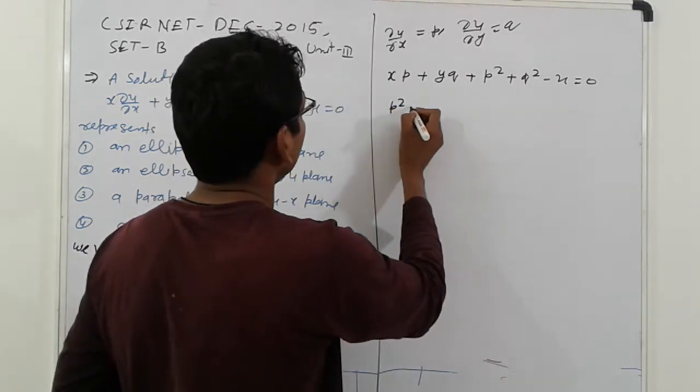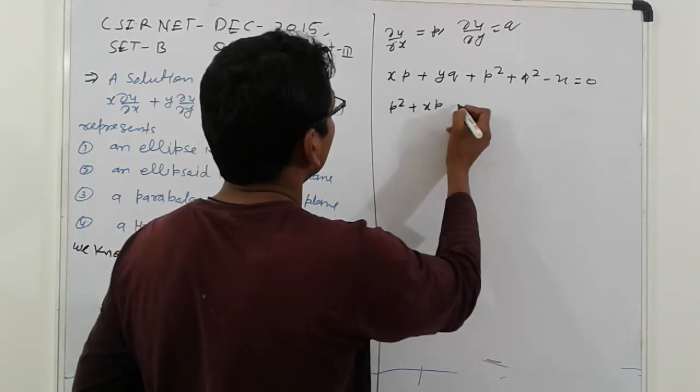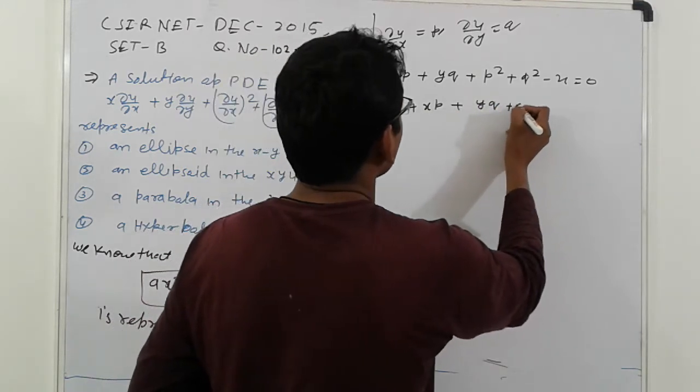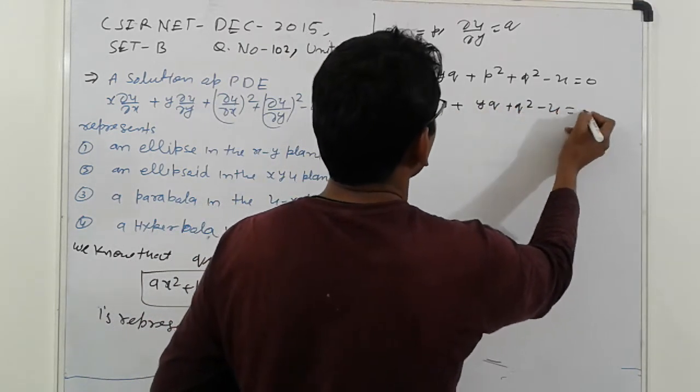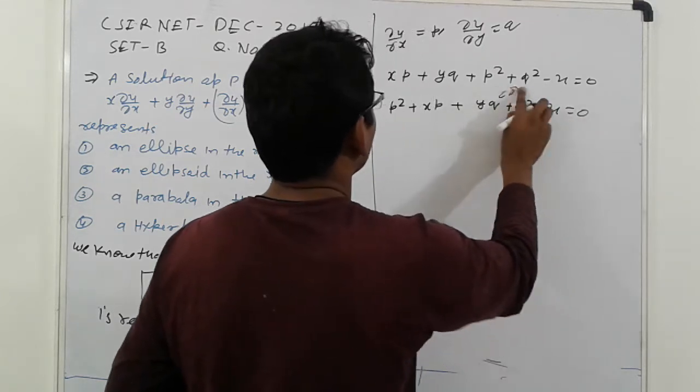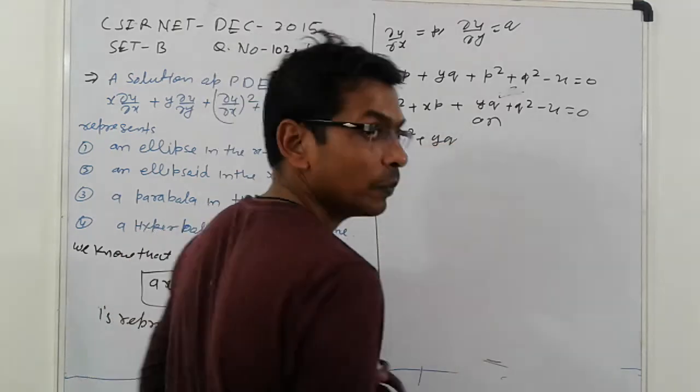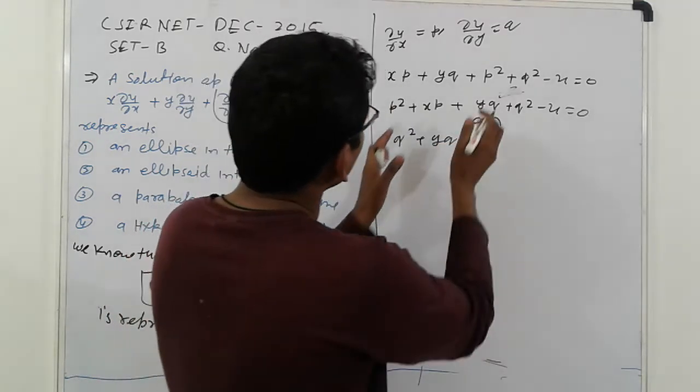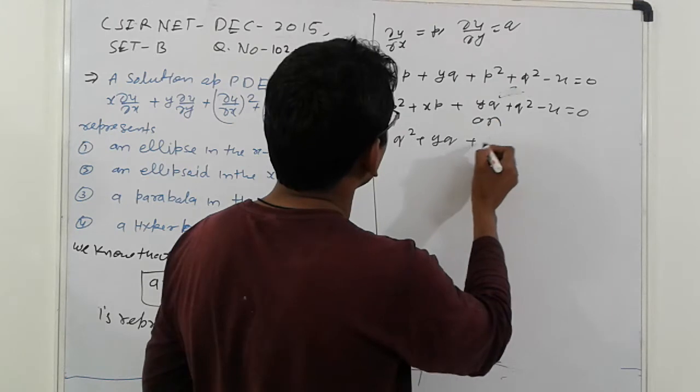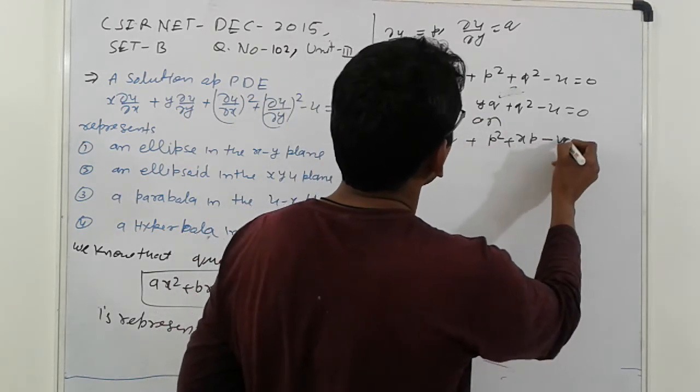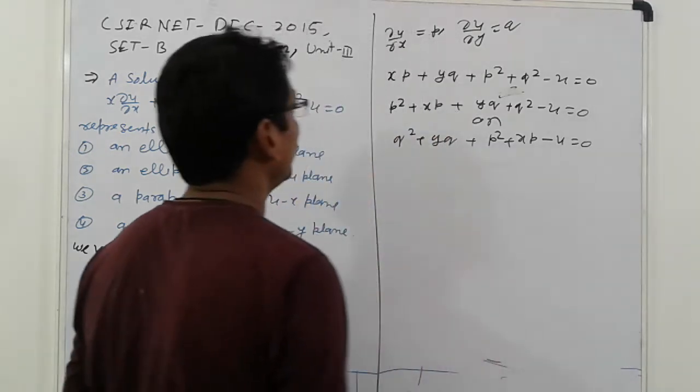So here, rearrangement of this: p square plus x of p plus y of q plus q square minus u equal to 0. Or that format q square plus y of q, and make it remaining. So here p square plus x of p minus u equal to 0.